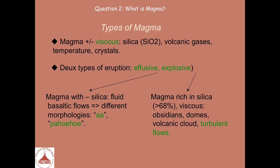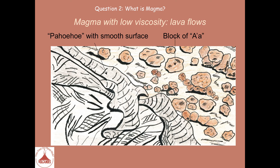If the magma is rich in silica, it is more viscous and will produce more explosive eruptions, though flows are still possible, such as flows of obsidian — a black volcanic glass that doesn't move very far. Explosive eruptions can also produce domes formed by very viscous flows, and very commonly volcanic clouds and turbulent flows. Pahoehoe flows advance with a smooth continuous surface, while A-A flows are blocks rolling on top of each other.